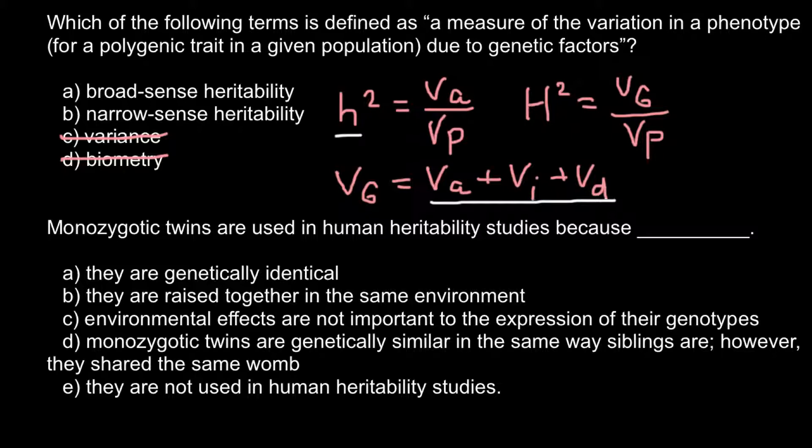A measure of the variation in phenotype due to genetic factors would be broad sense heritability. So the answer would be A, and this is the formula for broad sense heritability — this is the correct answer.